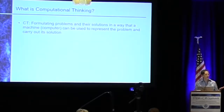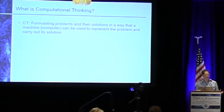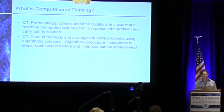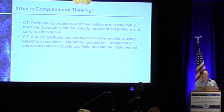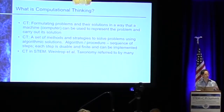I saw a number of definitions of computational thinking at the meeting: formulating problems and their solutions in a way that a machine or computer can be used to represent the problem and carry out its solution; a set of methods and strategies to solve problems using algorithmic solutions, where an algorithm is a sequence of finite, doable steps. That's more of a computer science approach. I also saw many people using the Weintraub et al. taxonomy, which we use in our work as well.